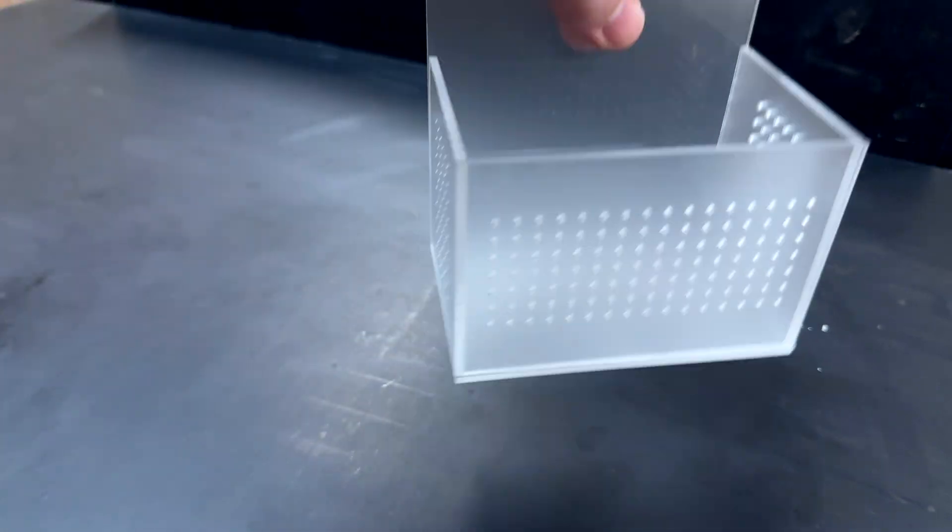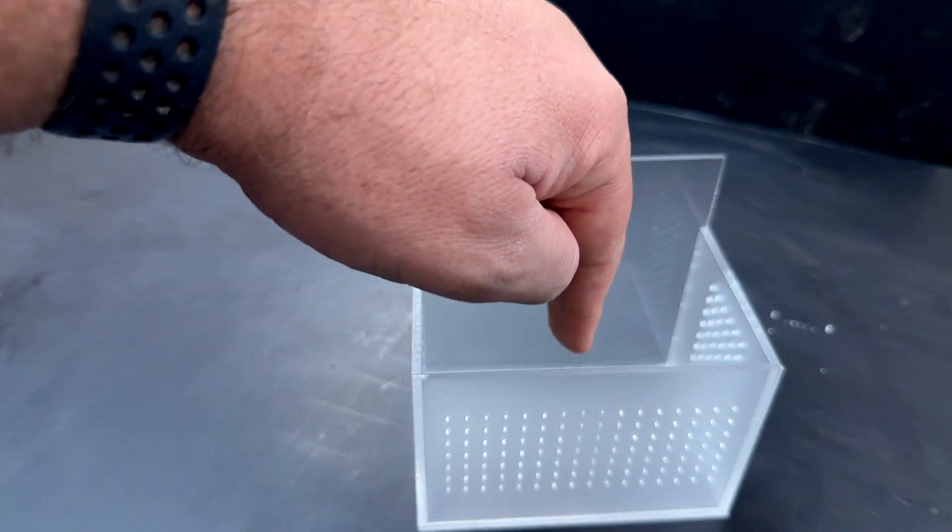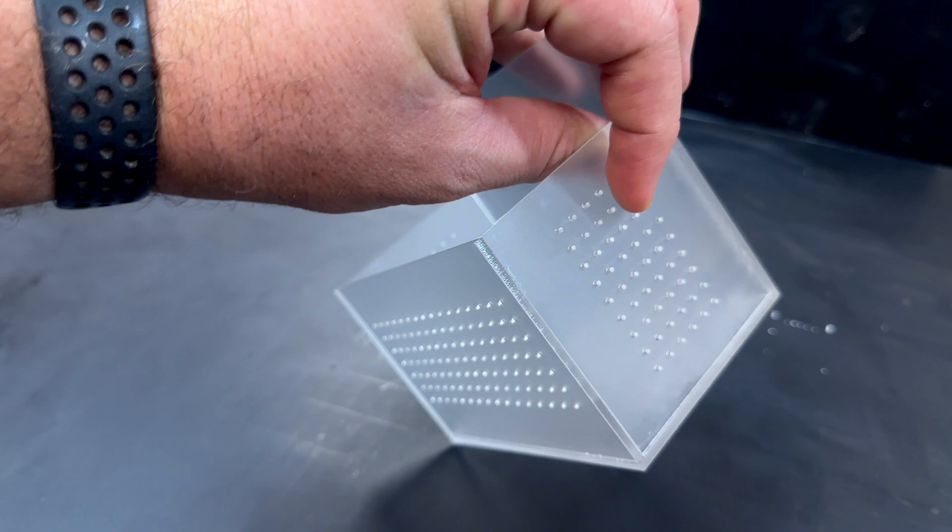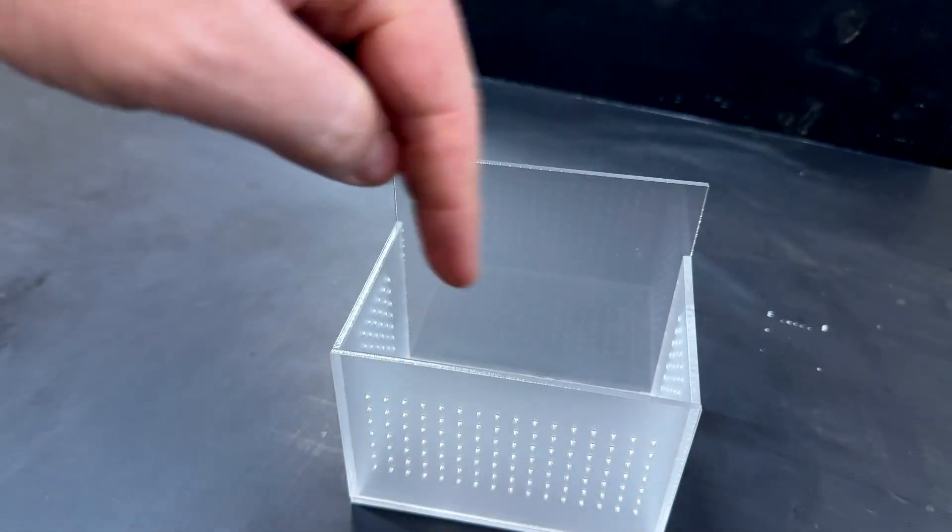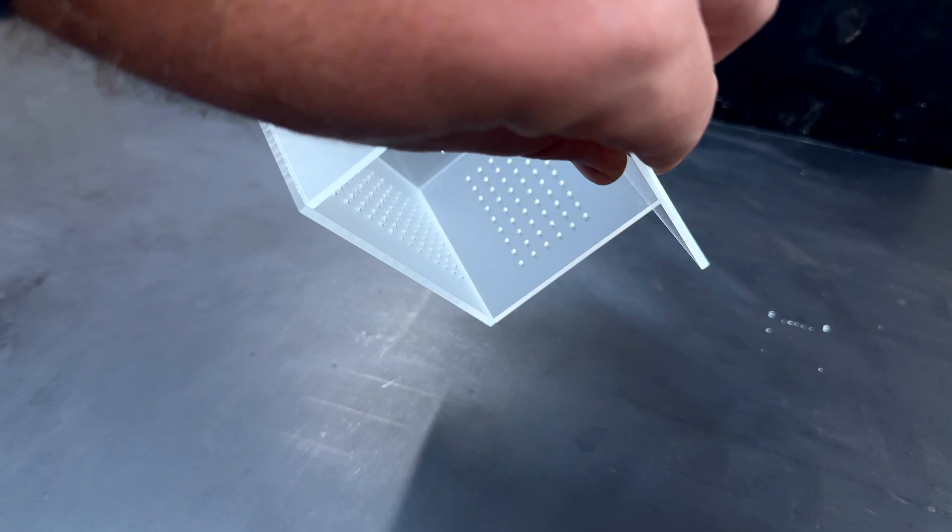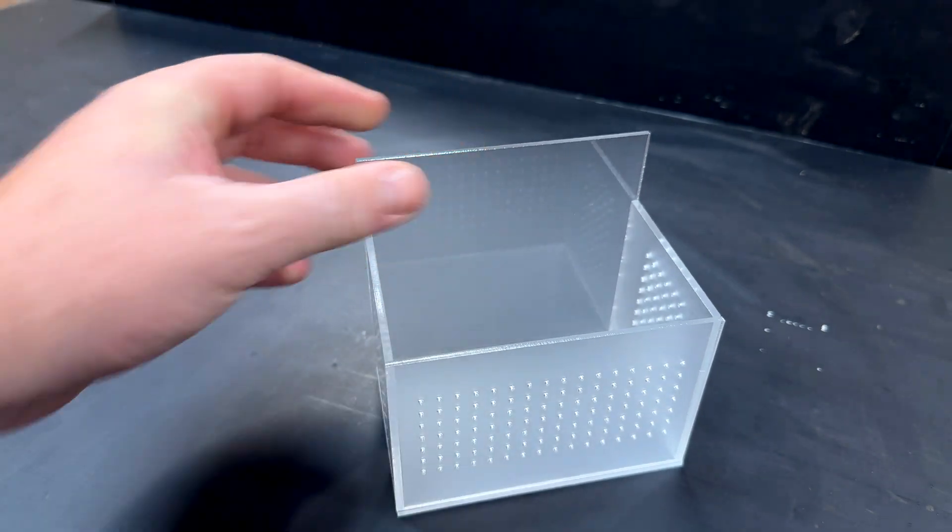So this is going to go on the inside of the tank. Little fish goes in here. It's got little holes in it so the water can circulate through, and then when they are big enough out they go into the big wide world.